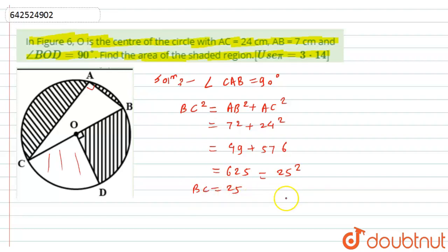Now, I want the radius of the circle. So, radius is half of the diameter. So, radius will be BC divided by 2, which is 25 divided by 2. Now, here what is stated is to find the area of shaded region.